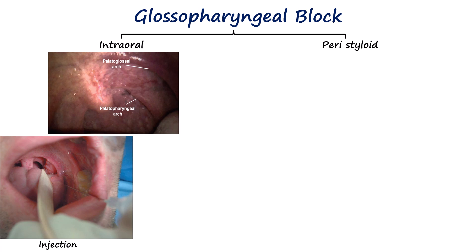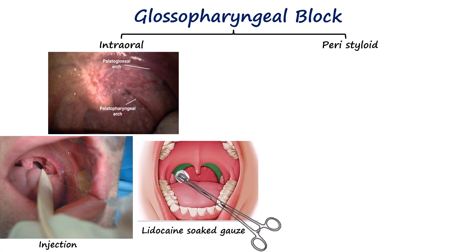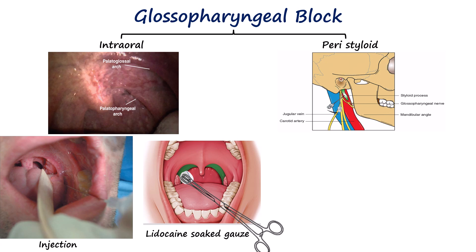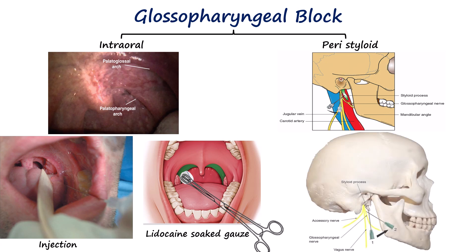Alternatively, a lidocaine-soaked gauze may be applied firmly to the area for several minutes. This method reduces the risk of intravascular injection but is less reliable than direct infiltration. In the peristyloid approach, which is an external approach, we inject local anesthetic just behind the styloid process, where the glossopharyngeal nerve runs. The internal carotid artery lies very close here, so careful technique and aspiration are essential.